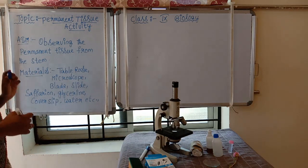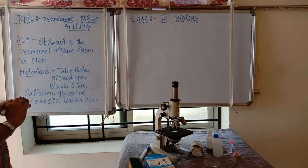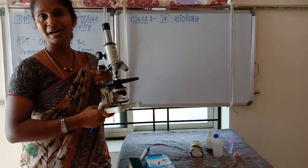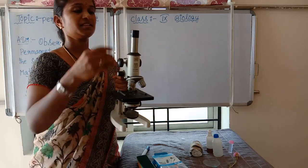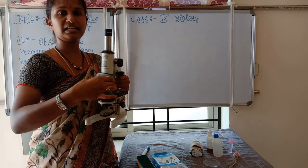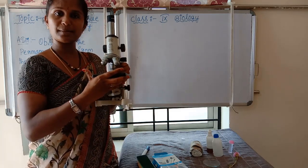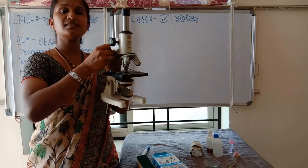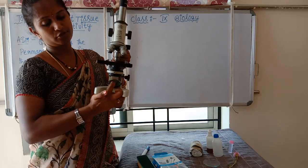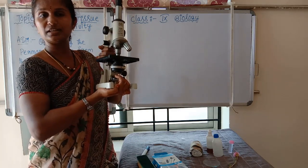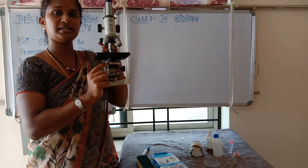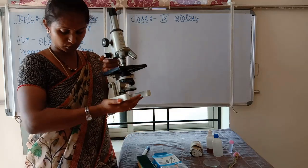Before the session, we already discussed the microscope. This is the compound microscope. This is the eyepiece — we observe through the eyepiece lenses. These lenses magnify the slide. This is the base, the condenser, the coarse adjustment, fine adjustment, and the mirror which reflects light rays onto the slide so we can observe it. The condenser assists the magnifying lenses.